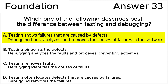We will see these sources in the explanation section of this video. Let's see why the rest of the answers are wrong. Answer B is incorrect because 'processes preventing activities' is a testing activity, not a debugging activity. Answer C is incorrect because removing faults is a debugging activity, not a testing activity.